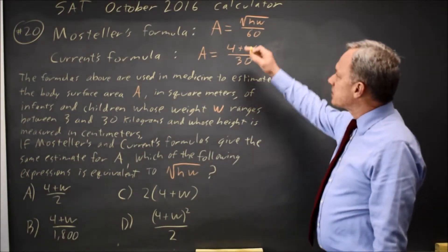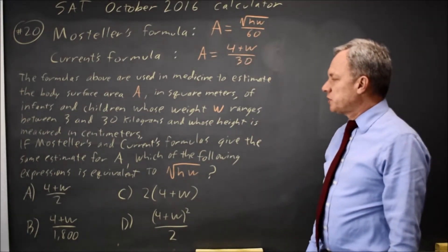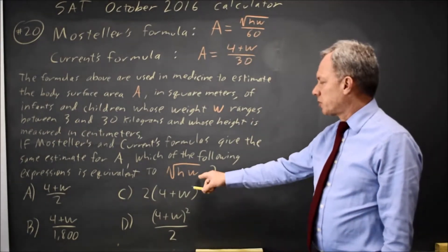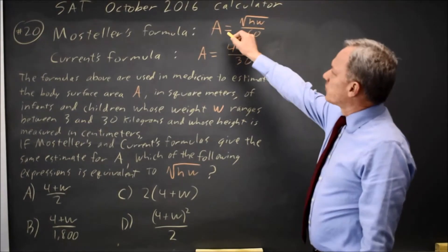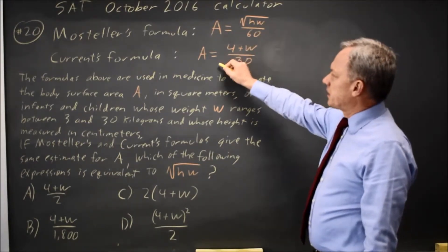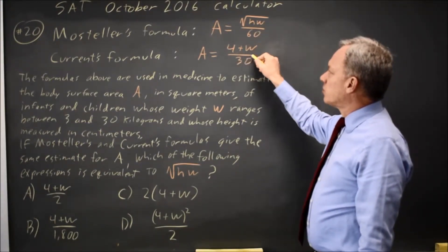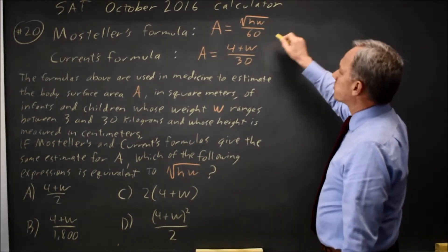And they say if they give the same estimate for A, which expression is equivalent to the square root of HW? So if A is equal to root HW over 60 and A is also 4 plus W over 30, these two expressions are equal.